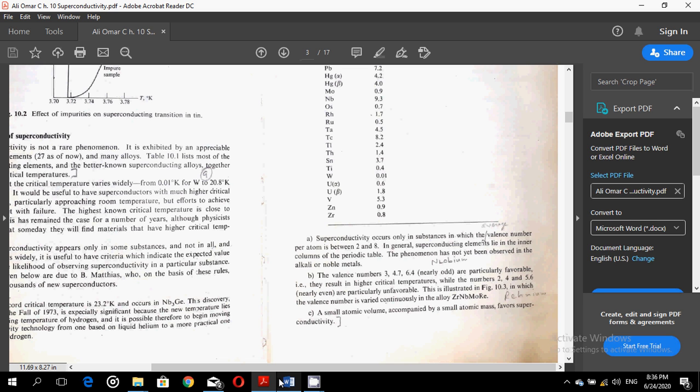Rule A: Superconductivity occurs only in substances in which the valence number per atom is between 3 and 8. In general, superconducting elements lie in the inner columns of the periodic table. The phenomena has not yet been observed in alkali or noble metals.